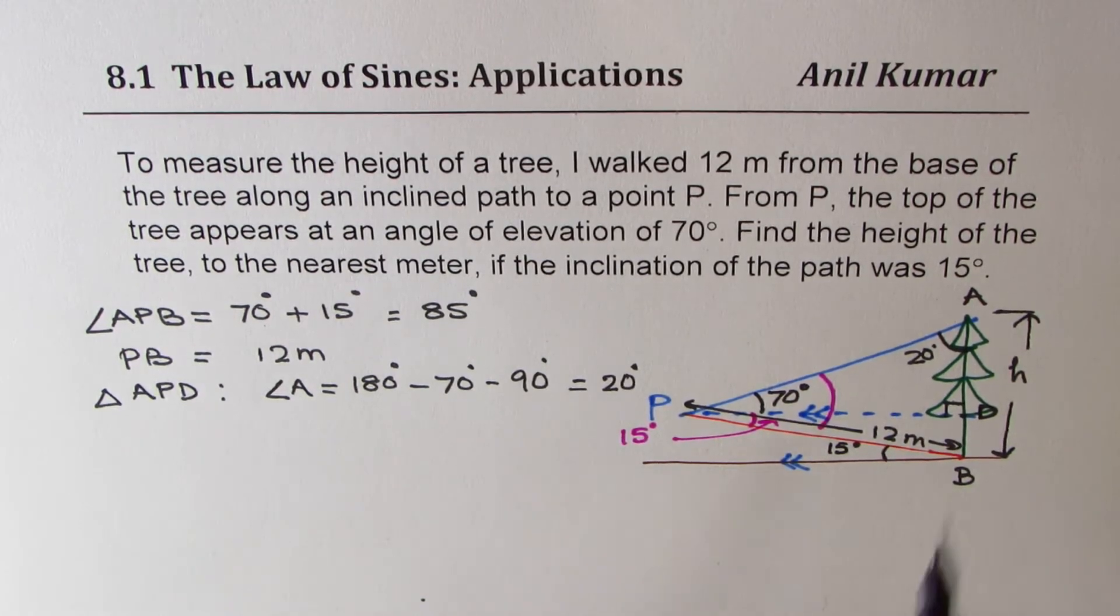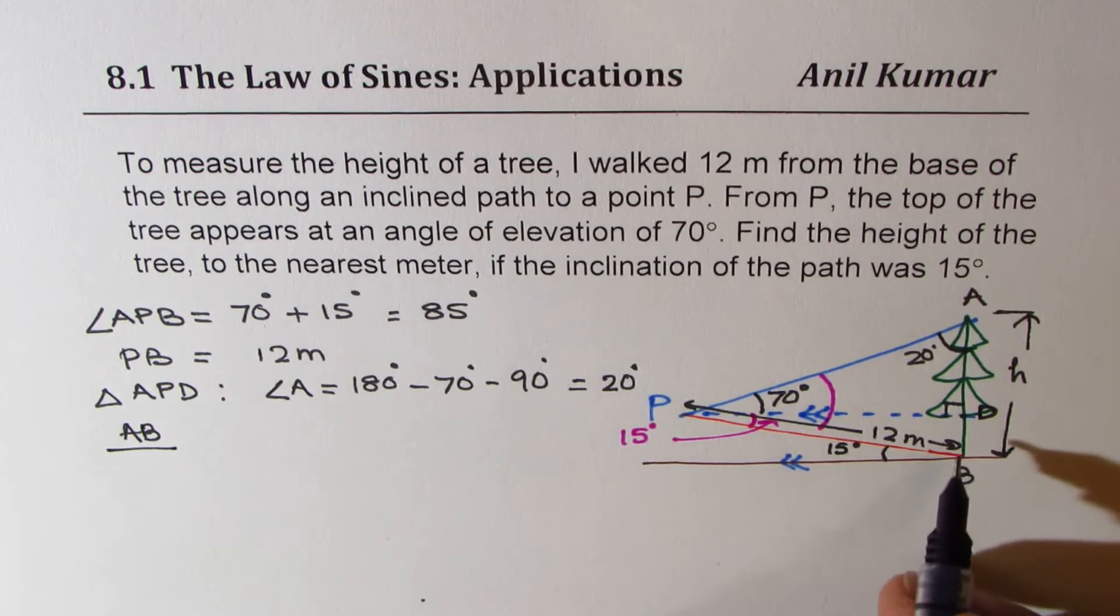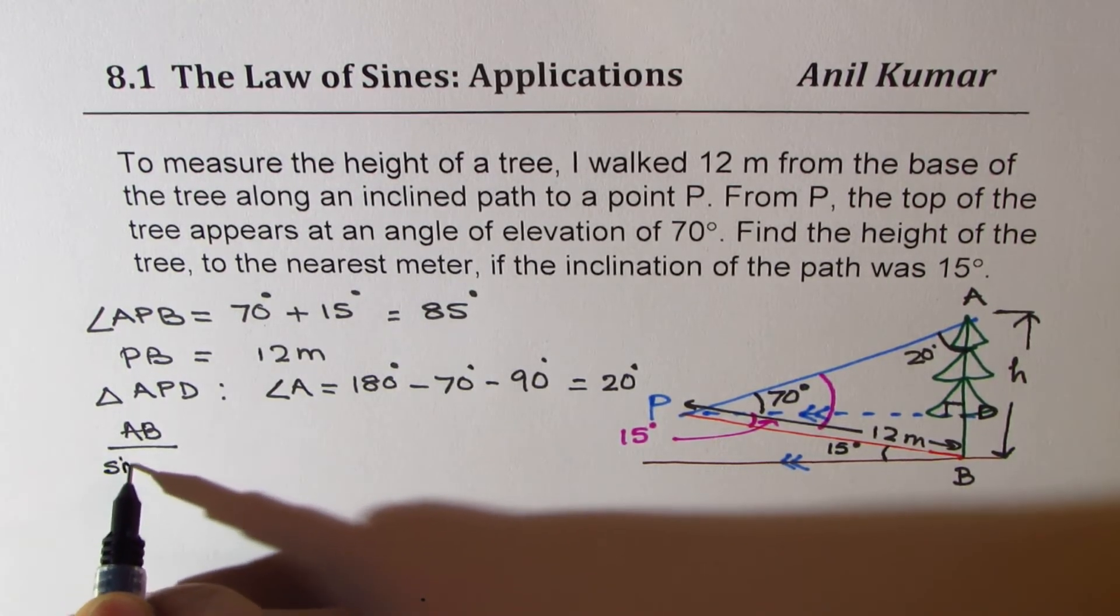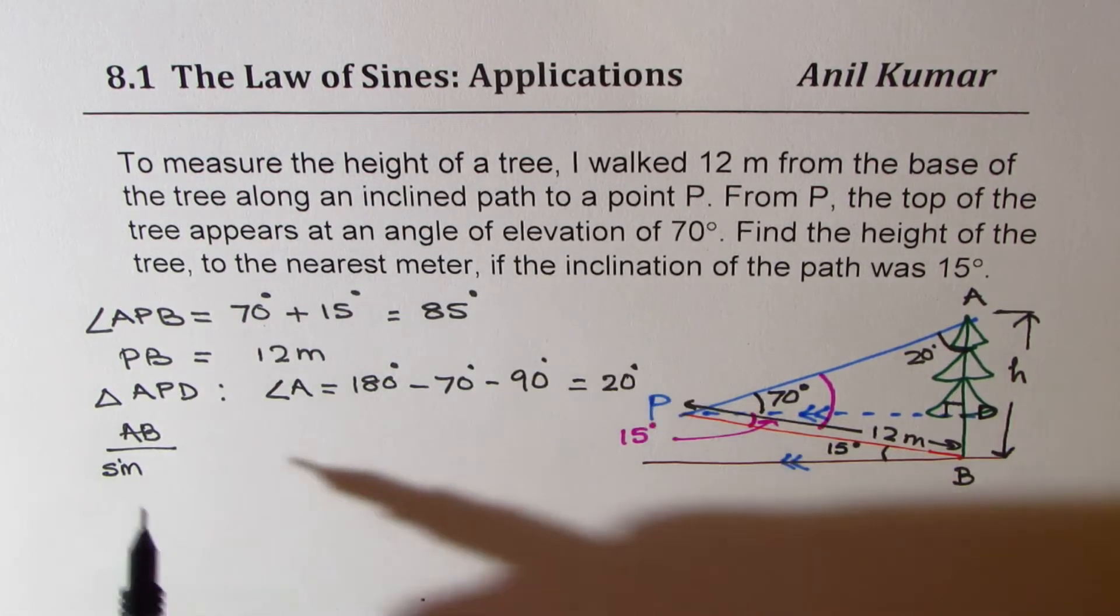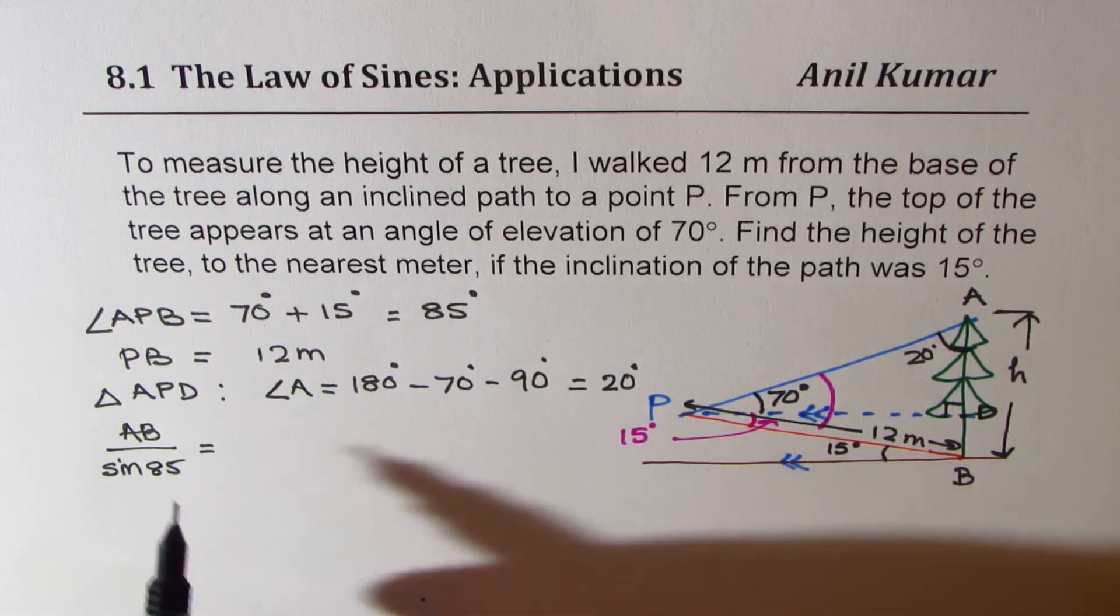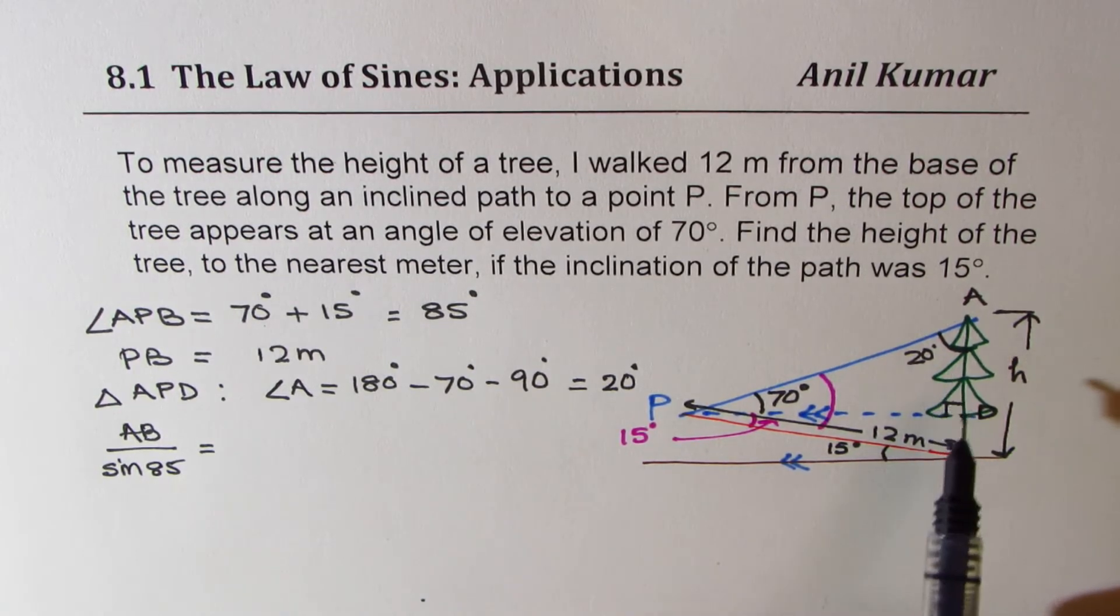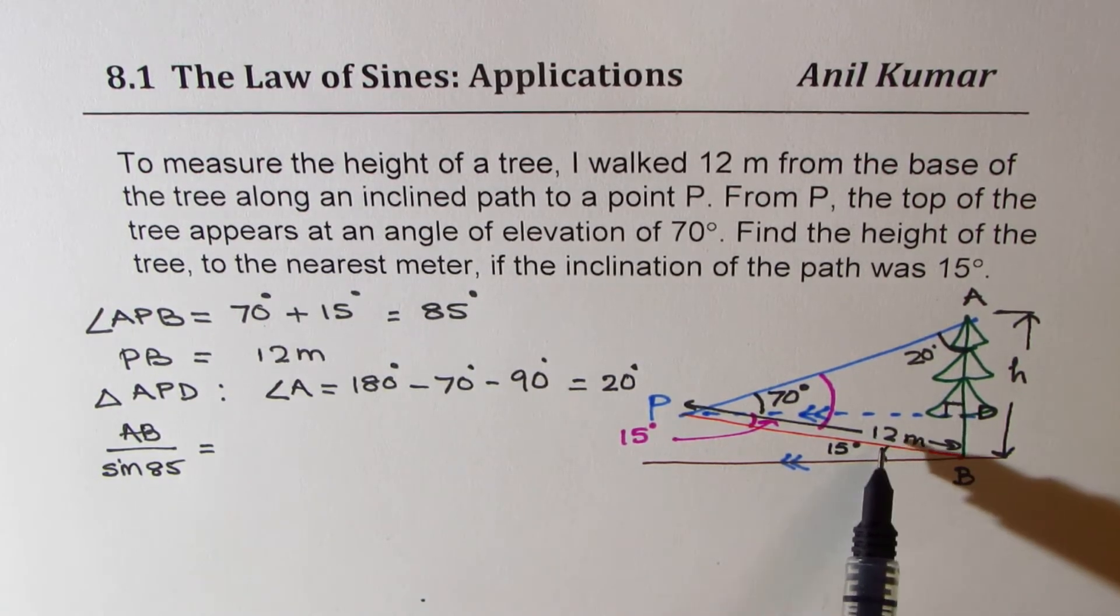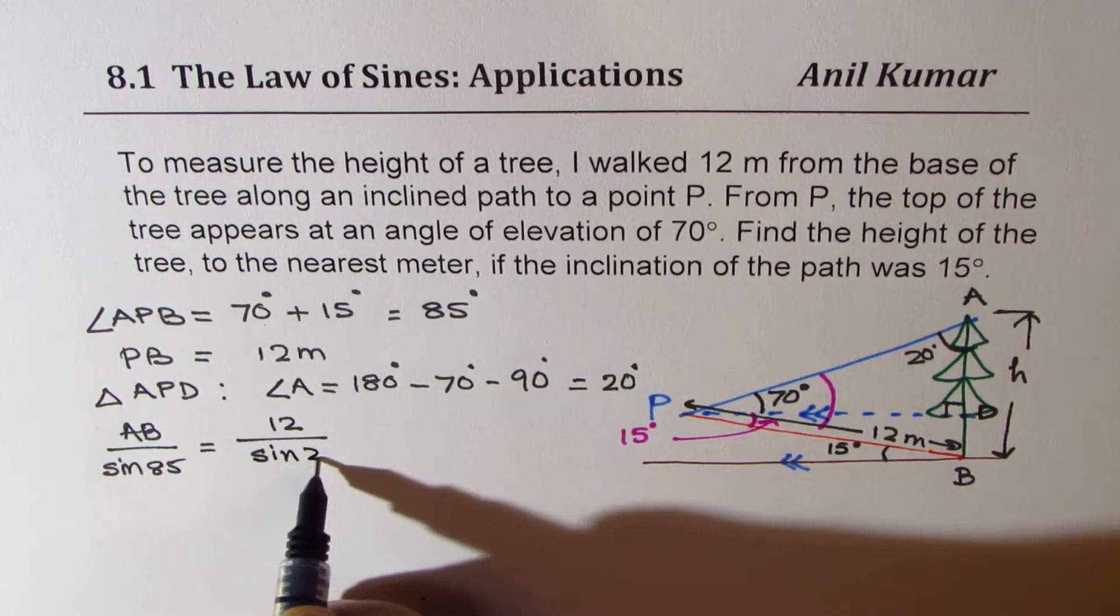Now we can apply the sine law and find the height. So the ratio of the side AB to sine of the angle which it makes, the angle it makes is P which is 70 plus 15, 85 should be equal to the length H which is AB. Now, what are we given? We are given the side of 12 meters opposite to 20 degrees. We'll use that one. So it's equal to 12 over sine of 20 degrees.